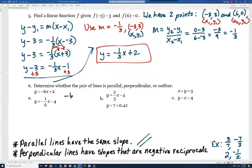If you look at part A, notice the first equation has a slope of -6, and the second has a slope of -1/6. Now these are reciprocals, but they're not negative reciprocals. So this would be the case where they're neither. They're not parallel, they're not perpendicular.